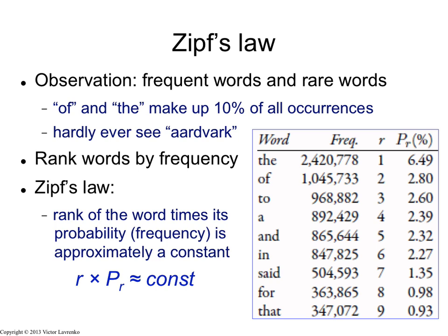Now I can also see the ranks. 'The' has rank one, 'of' has rank two. If you look at this table, you may notice something quite interesting. Suppose I take the frequency and multiply it by the rank. For 'the', I have two and a half million times one. For 'of', I have a million times two — again, a figure in the ballpark of about two million. For 'to', I have 900,000 times three, giving something in the range of 2.8 to 2.9 million. For 'a', I have 900,000 times four, giving about three million. So when multiplying frequency times rank, I keep getting approximately the same number — a number in the range of two to three million.